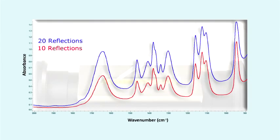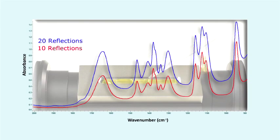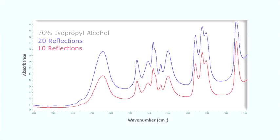Let's compare spectra collected with Pike's HATR 10 and 20 reflection zinc selenide plates. The sample is 70% isopropyl alcohol. The absorbance bands increase by a factor of 2 when doubling the number of reflections.